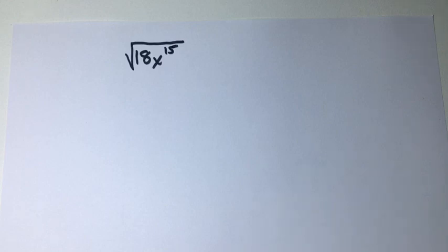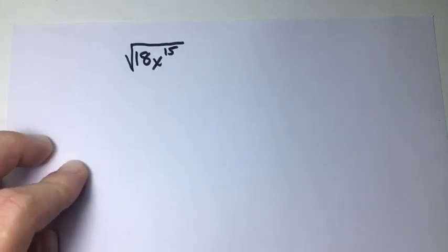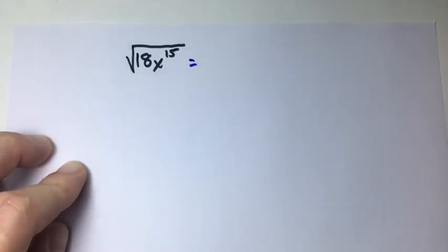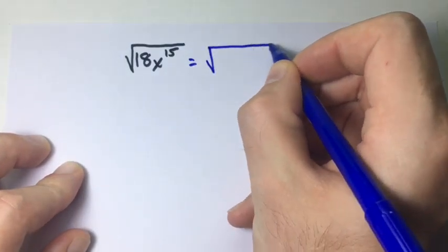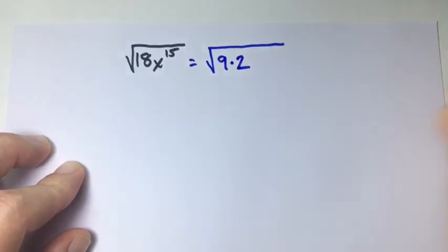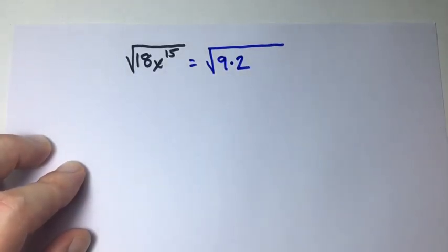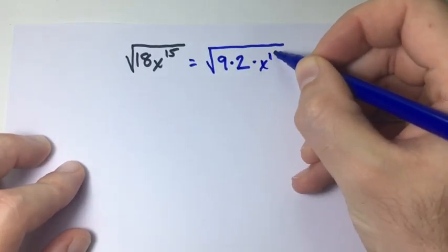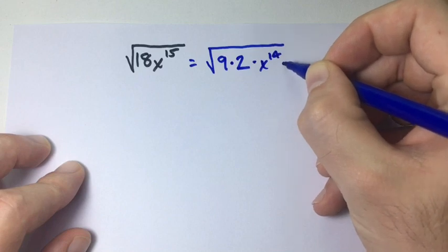In this example we have the square root of 18 times x raised to the power of 15. Neither of these is a perfect square, but we can break them into factors that make perfect squares. For 18, we know 9 times 2 are factors, and 9 is a perfect square. For x to the 15, we can write it as x to the 14 — which is a perfect square — times x.